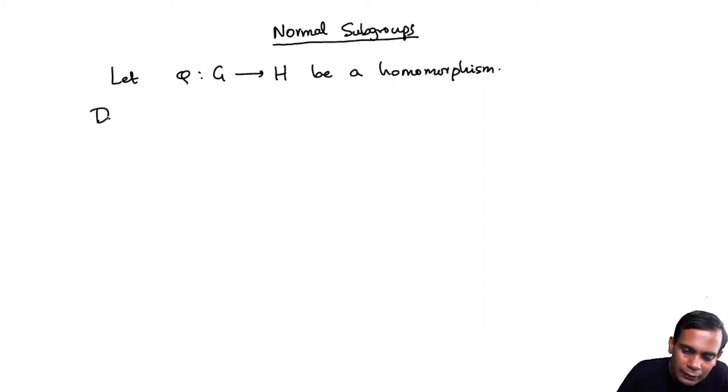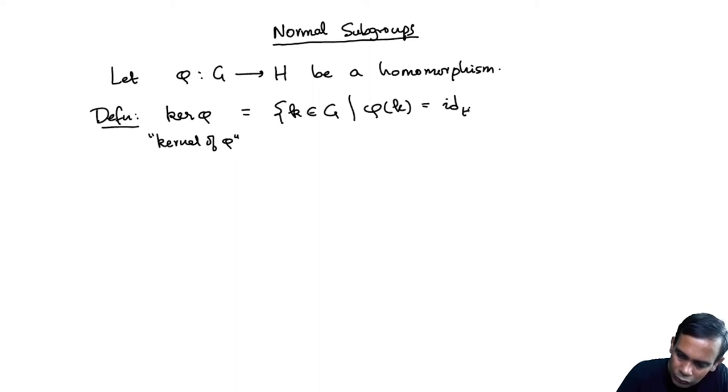Now I define the kernel of phi, which I denote ker phi. It's called the kernel of phi. To be those elements K in G such that phi of K is the identity element of H. It's easy to see that kernel phi is a subgroup of G.